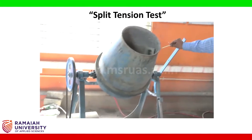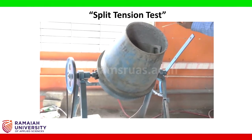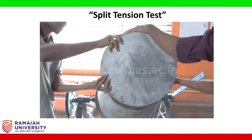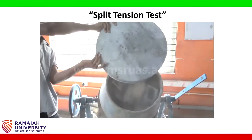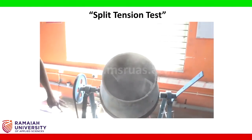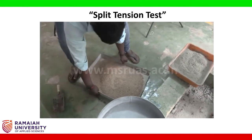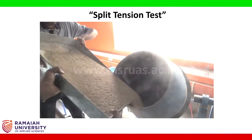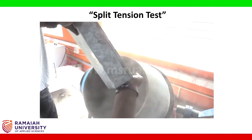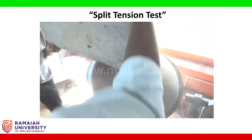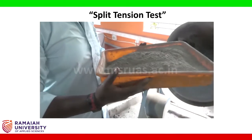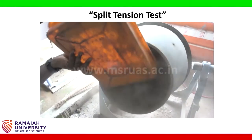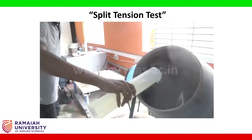We start mixing the concrete. First, we make sure the concrete mixer is oiled on the inner side. We add the coarse aggregate to the concrete mixer first, then the fine aggregate is added, followed by the cement along with the water required for this particular mix.